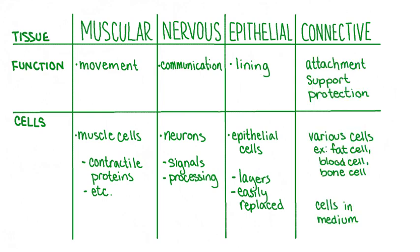Connective tissue has various functions such as attachment, support, and protection. It does many different jobs, so it comes in different forms, each with different types of cells. Connective tissue almost always consists of living cells suspended in a non-living medium.